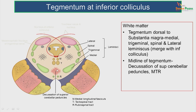In the median region, we can appreciate the decussation of the superior cerebellar peduncles. The ascending fibers go to the thalamus and the descending fibers go to the reticular formation in the pons and medulla. Just in front of the central gray matter, we can appreciate the medial longitudinal fasciculus, which carries fibers from the vestibular nuclei, tectospinal fibers, and rubrospinal tract.